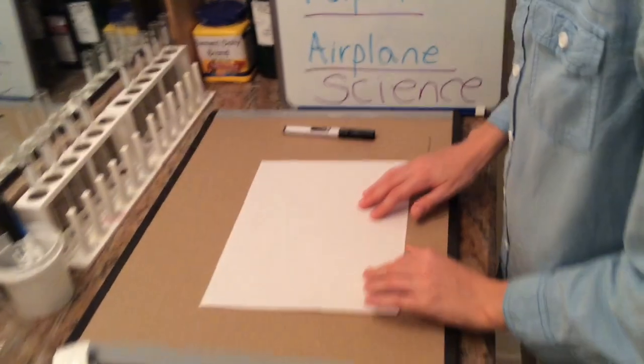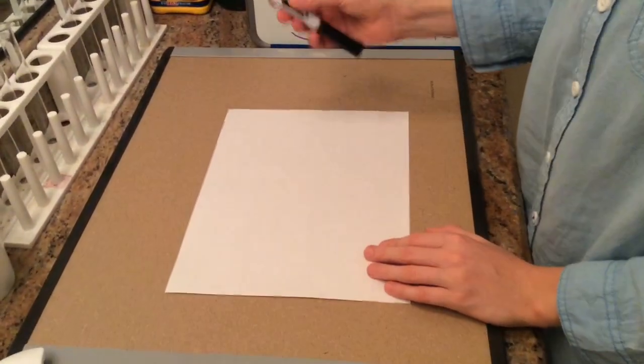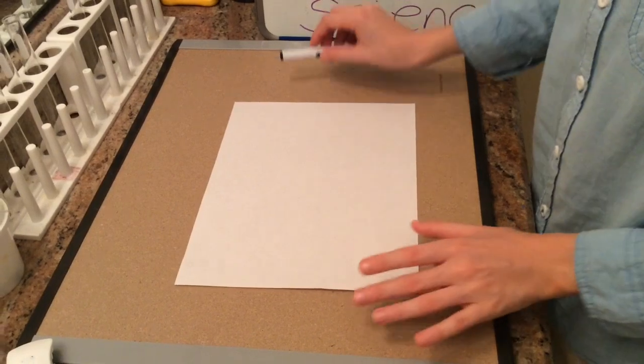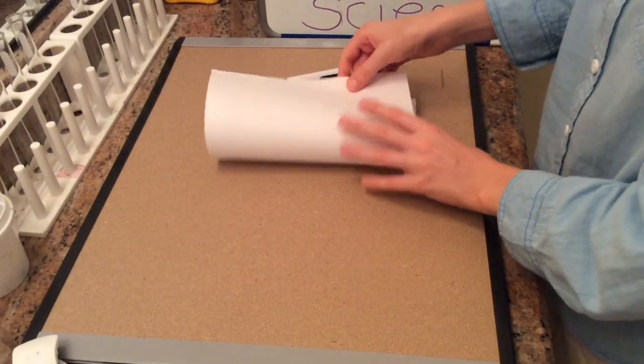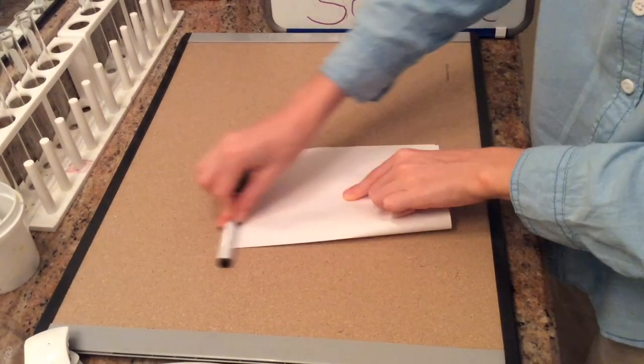So we're going to start with a simple eight and a half by eleven sheet of paper and a marker or pencil that you'll be able to use to make the creases. Now let's fold it over in half like this and crease.